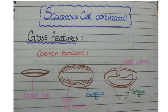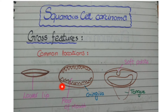The first important point about gross features is the most common locations where squamous cell carcinomas of the oral cavity develop. I have drawn three pictures of the oral cavity showing these areas. One of the most common locations is the lower lip. Other areas include the gums and the floor of mouth, as well as the soft palate and tongue.